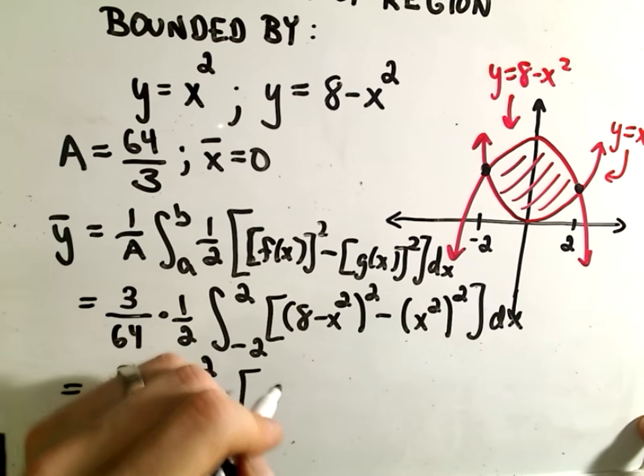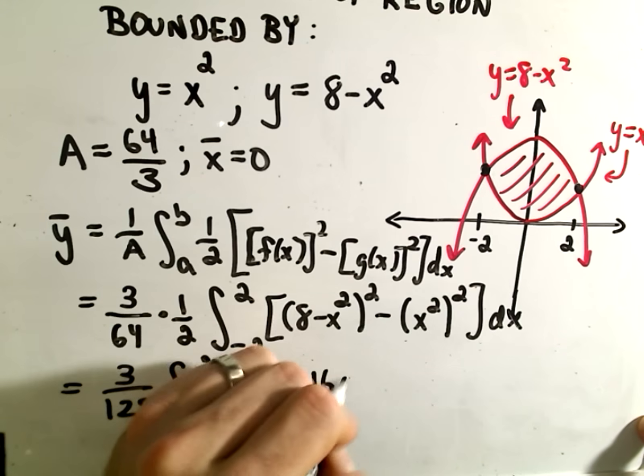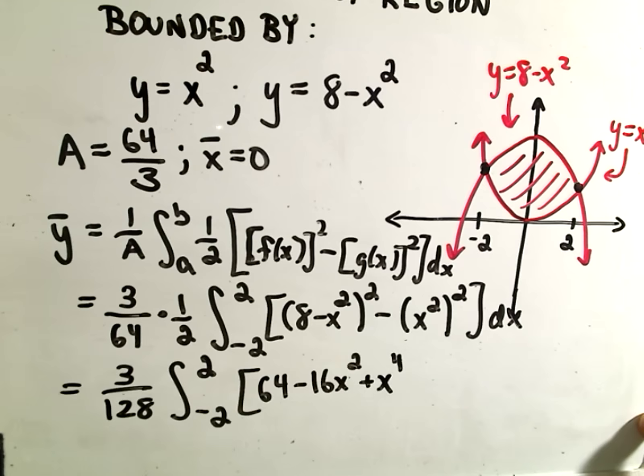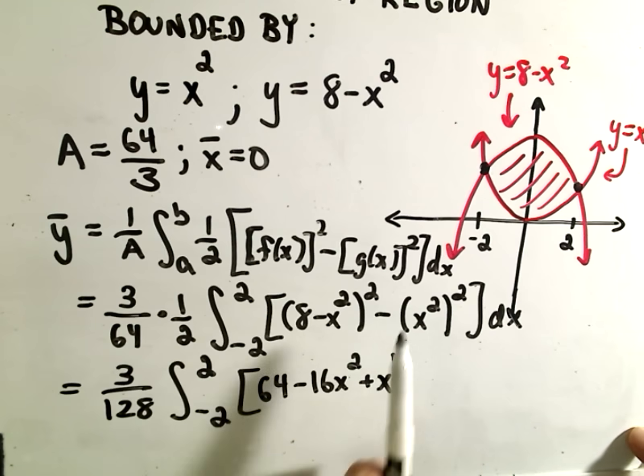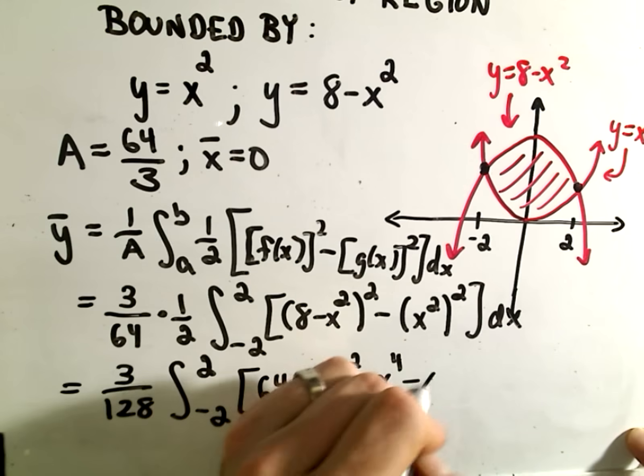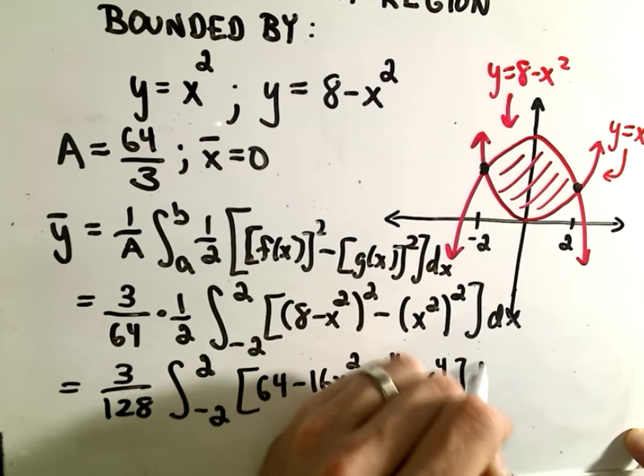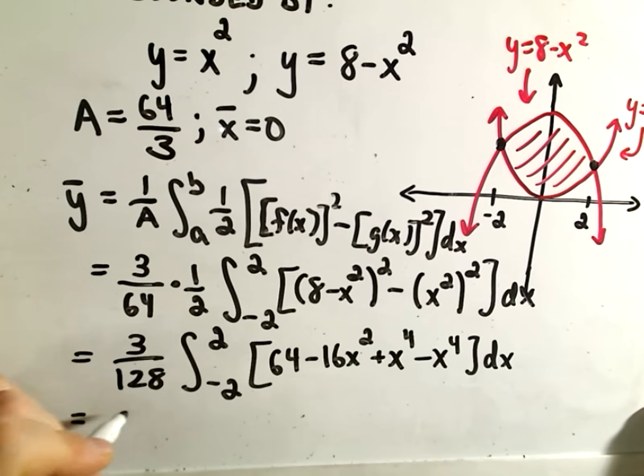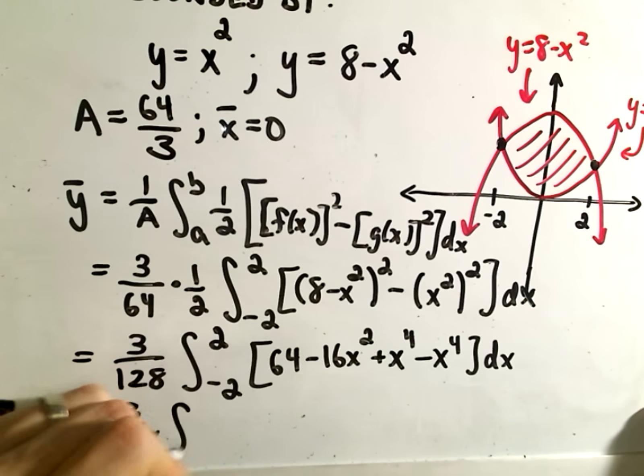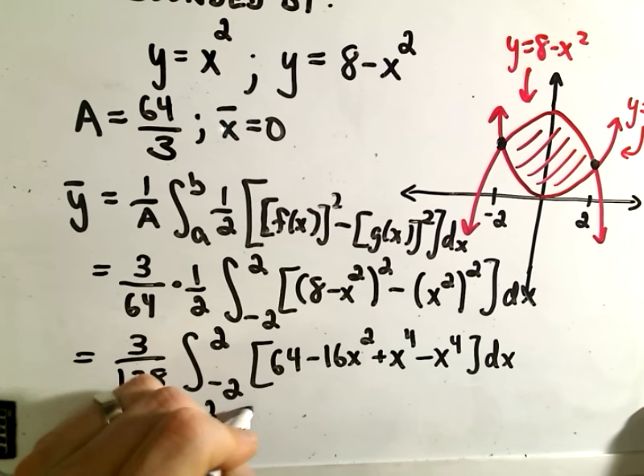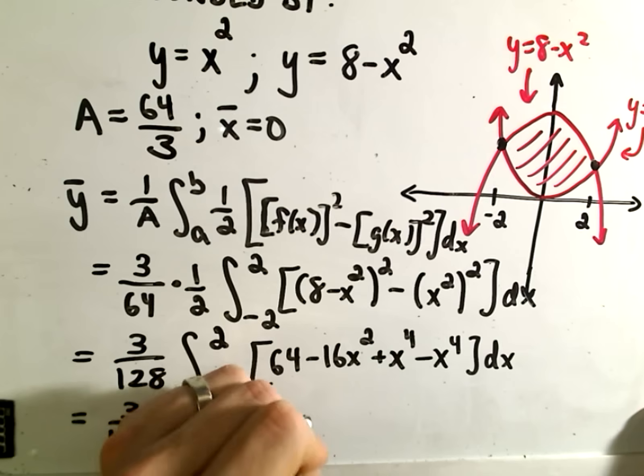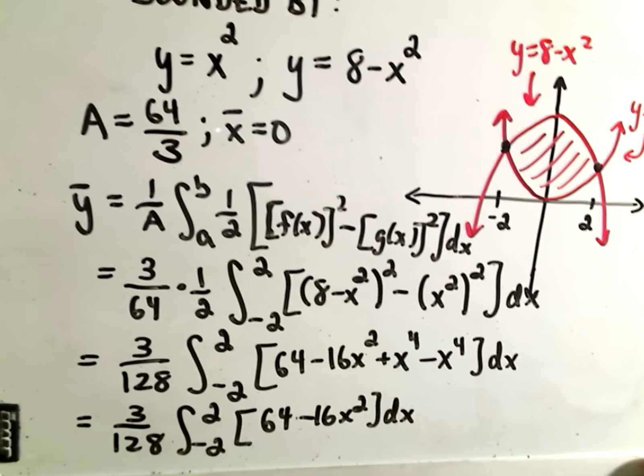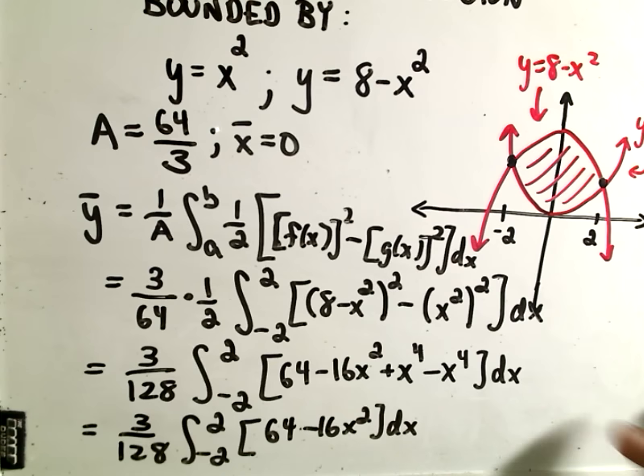We'll get 3/128 out front from -2 to 2. If we expand (8 - x²)², we'll get 64 - 16x² + x⁴. On the outside, I'll get -x⁴. Both of these will cancel out, the x⁴ terms. So we still have 3/128 from -2 to 2 with 64 - 16x² dx left over.